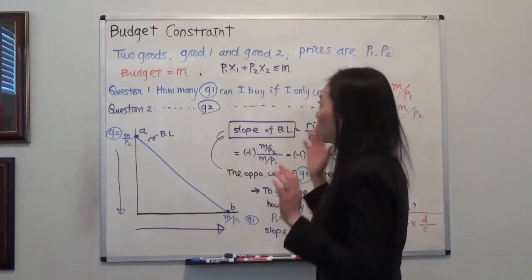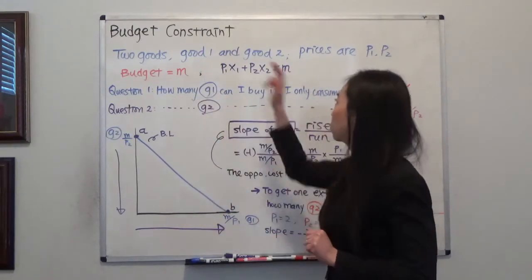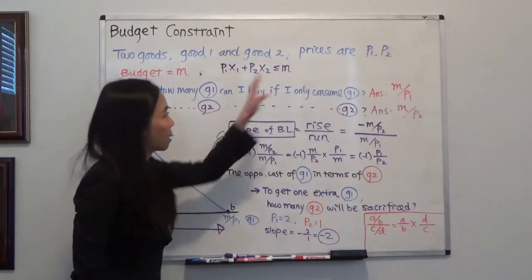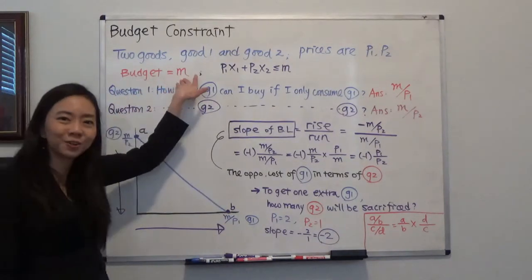Today we're going to draw our budget line. We have two goods, good one and good two, and the prices of good one and good two are P1 and P2 respectively. We have a budget M dollars.